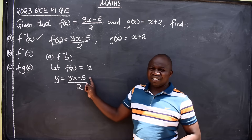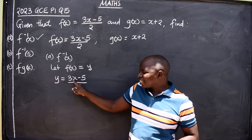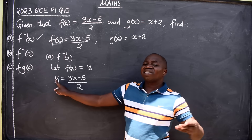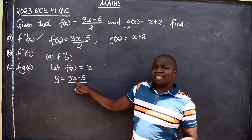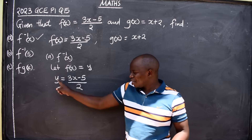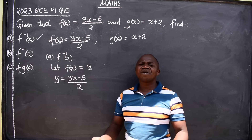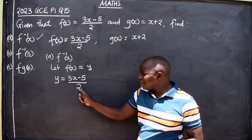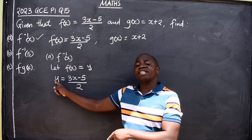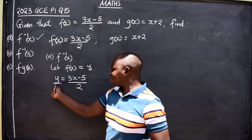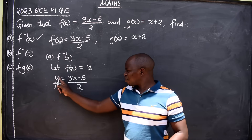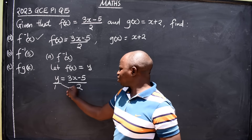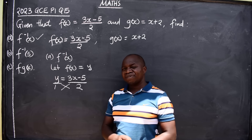Currently y is the subject of the formula, but we want x to be the subject. To do that, look at the given function — it has a fraction, so on the other side make it a fraction too, putting y over 1. Now that you have a fraction on both sides of the equal sign, the next step is cross multiplication.